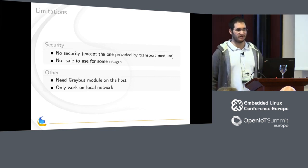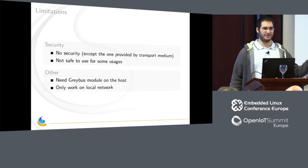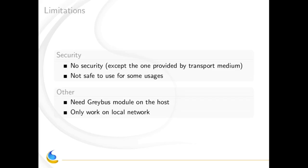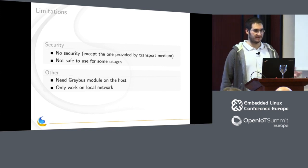Another important limitation — and I heard it a lot in other talks — is security. Currently Greybus doesn't define any security. There is no encryption, nothing like that, and that's very bad. If we are using Bluetooth, it's not really important because Bluetooth has encryption and does peer-to-peer, so it's protected. But if we are using TCP/IP, there is no protection. We can sniff what is happening on TCP/IP, we can inject Greybus operations. So for some usage, Greybus is currently not safe. We need to add security.